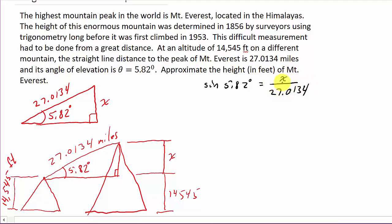So I know that the sine of 5.82° is equal to opposite over hypotenuse. And so if I solve this for X, I get X = sin(5.82°) × 27.0134.